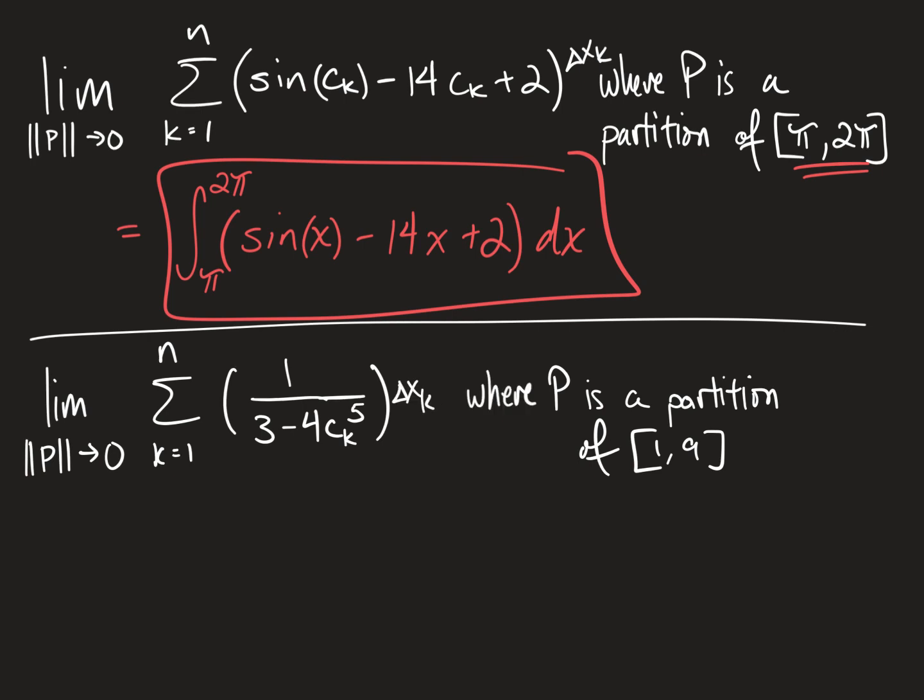For the other example down here, there's a similar looking limit. But setting it up as a definite integral is really not all that difficult. Look at the interval here. So the integral will go from 1 to 9 of 1 over 3 minus 4x to the 5th power. Replace your c sub k with an x, and then you replace the delta x sub k with dx. And that's all there is to it.